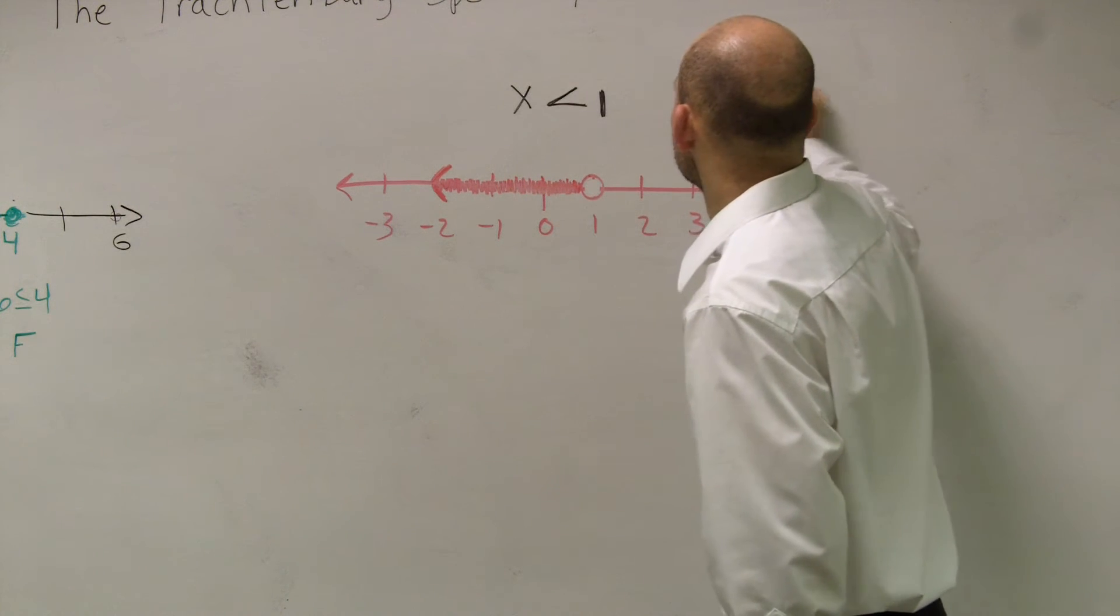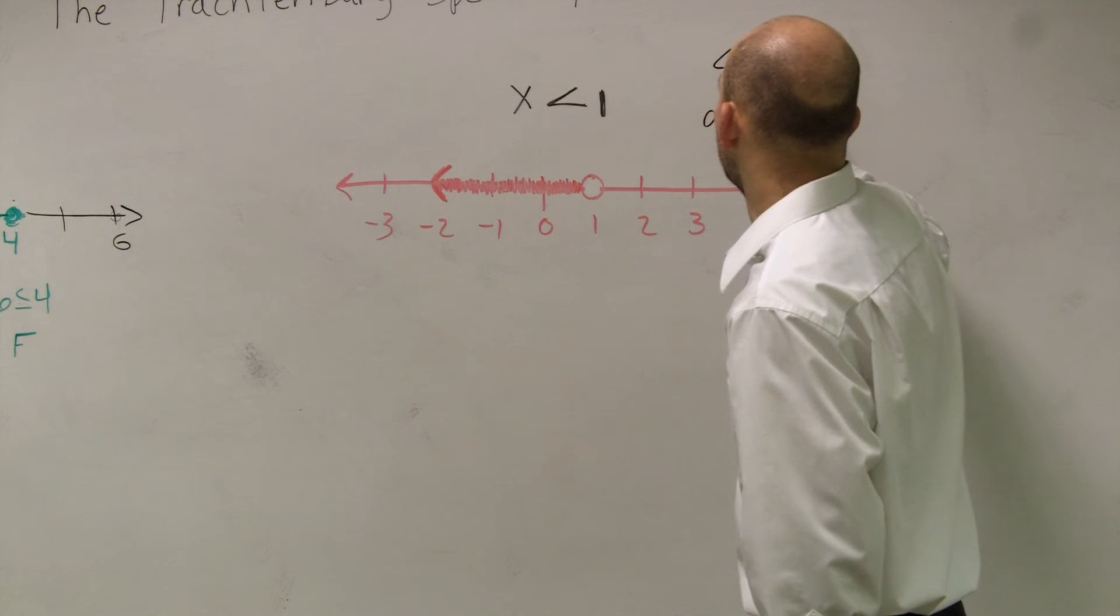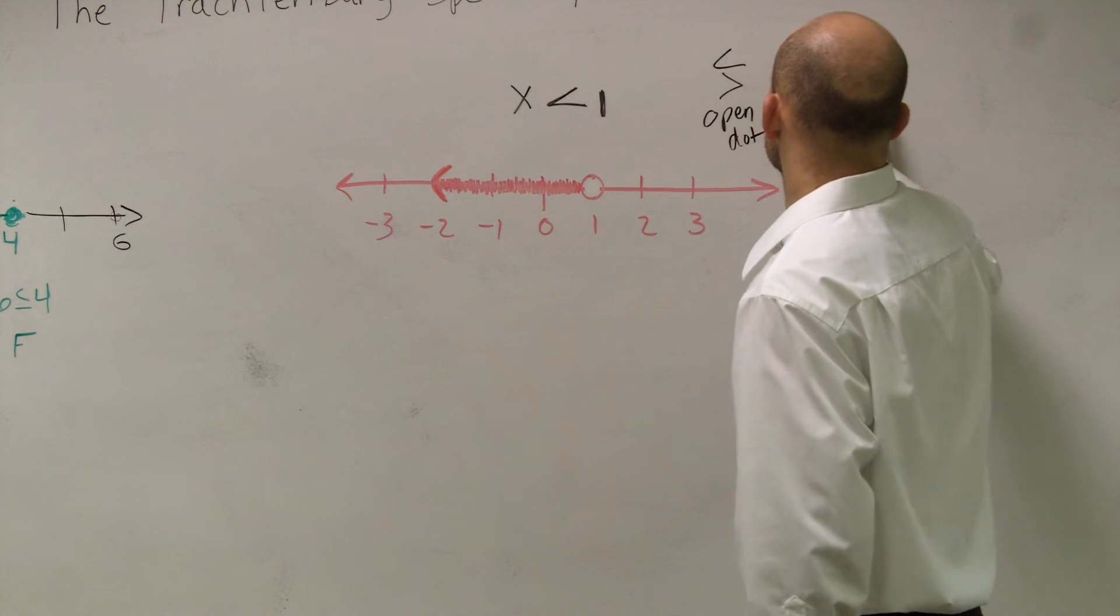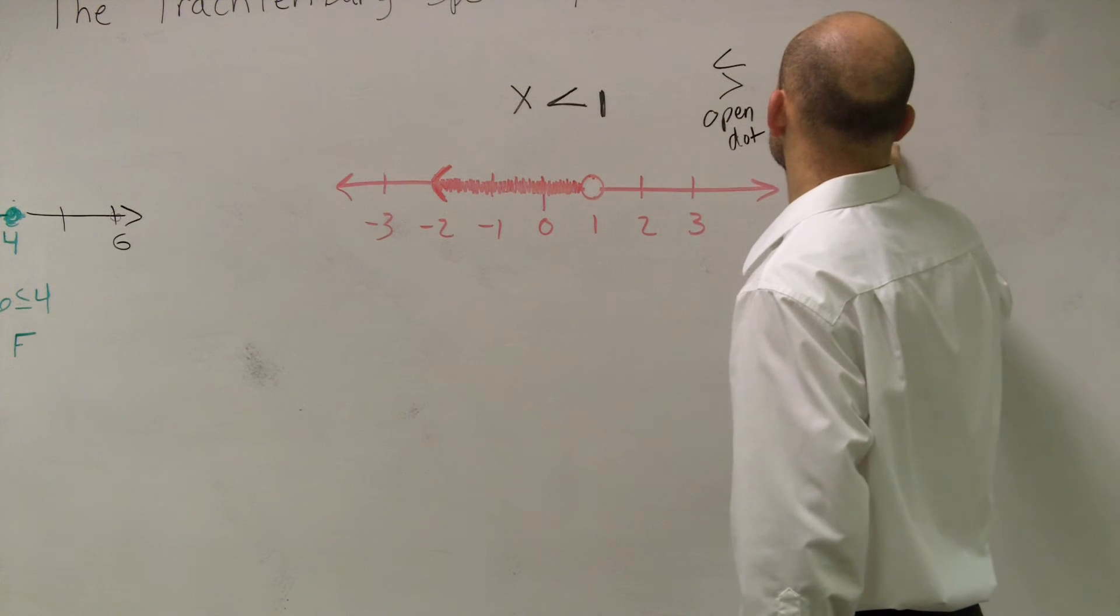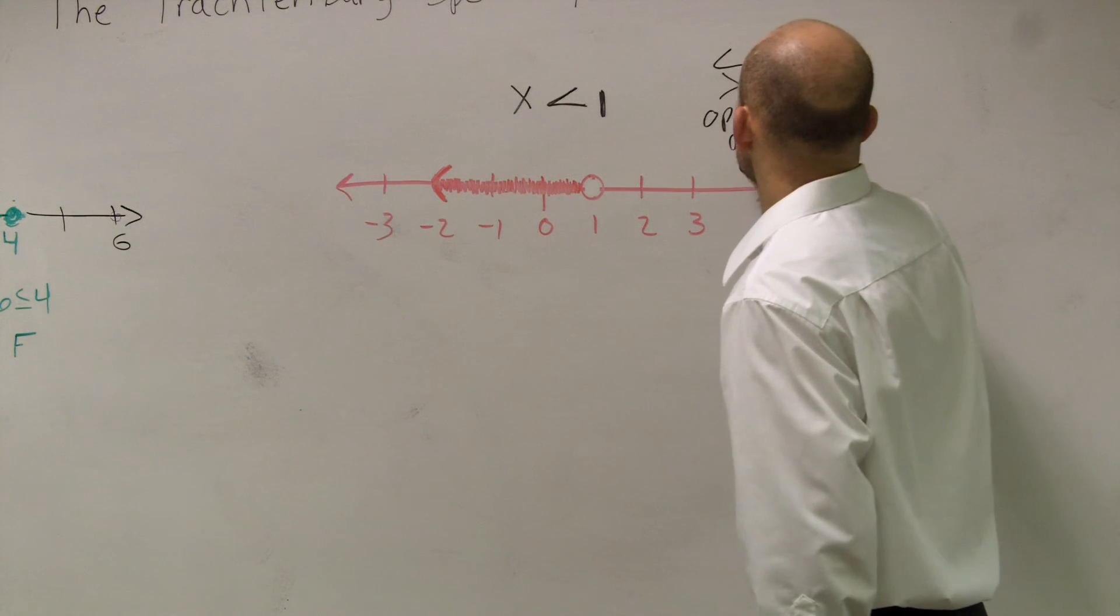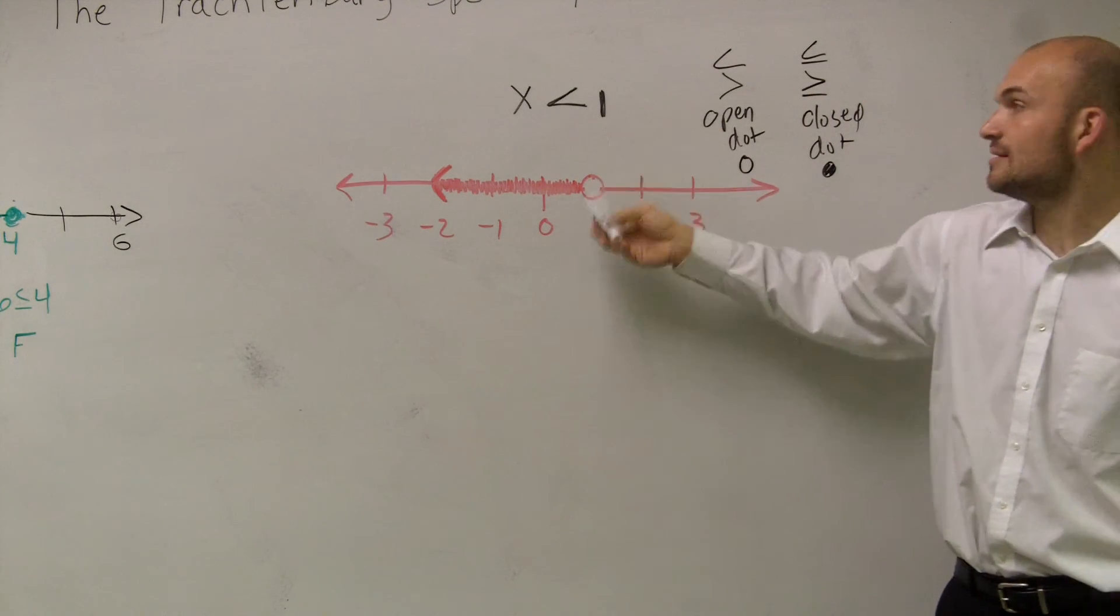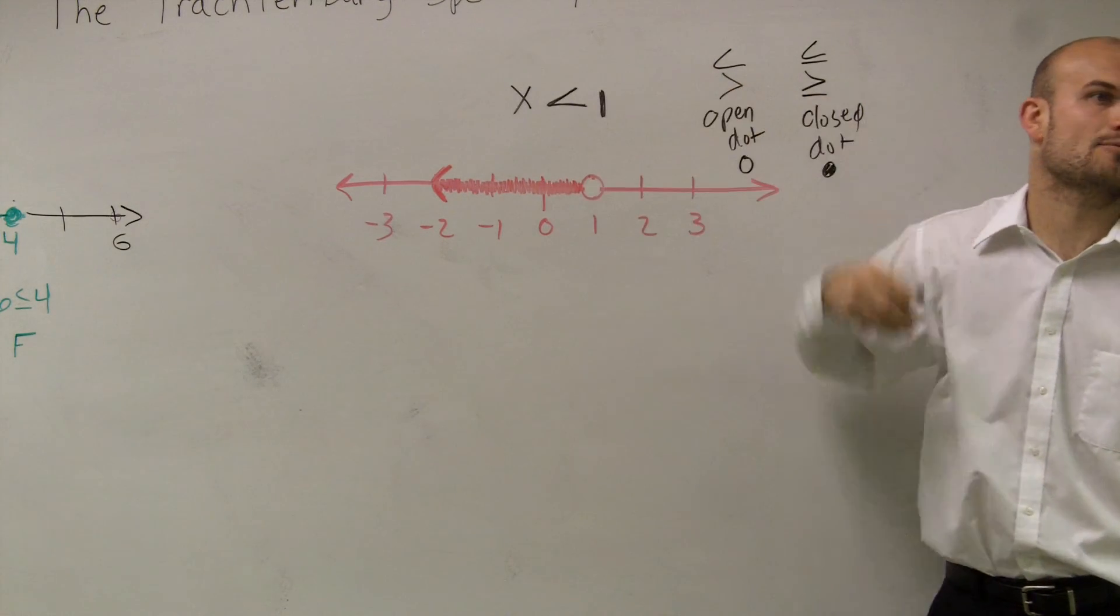Remember, a less than or a greater than is what we call an open dot, and less than or equal to or greater than or equal to is a closed dot. So therefore, since this is an open, I'm going to leave it as x is less than 1.